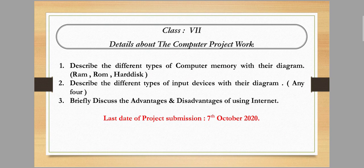Topic number two is: describe the different types of input devices with a diagram. There are many input devices discussed in your book, like light pen, barcode reader, optical character reader, and optical mark reader. You have to discuss only four input devices, draw diagrams of only four input devices, and discuss about them. The next topic is very easy: discuss the advantages and disadvantages of using the internet.